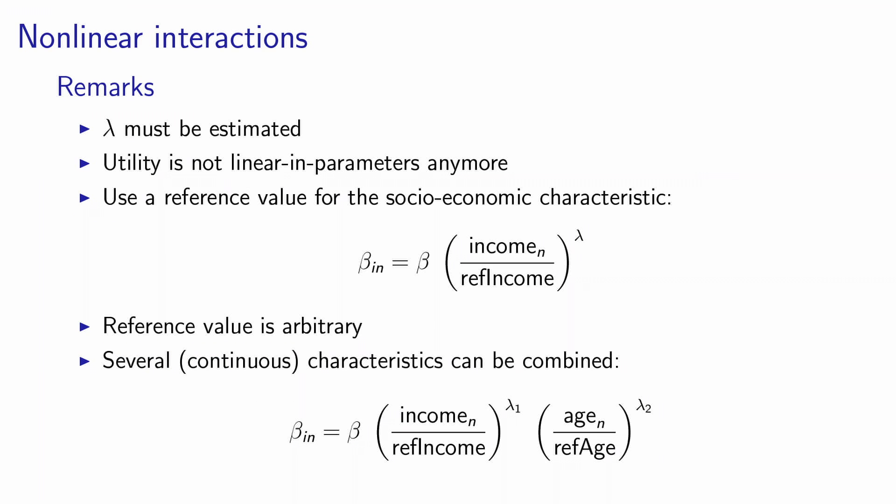Some remarks associated with this specification. As I said, λ must be estimated from data, and the utility in this case is not linear in parameters anymore. Sometimes because you raise a value of income to a power, this generates numerical issues. So it's usually a good idea to divide income by a reference income, like the mean income in the population or the max income in the population.